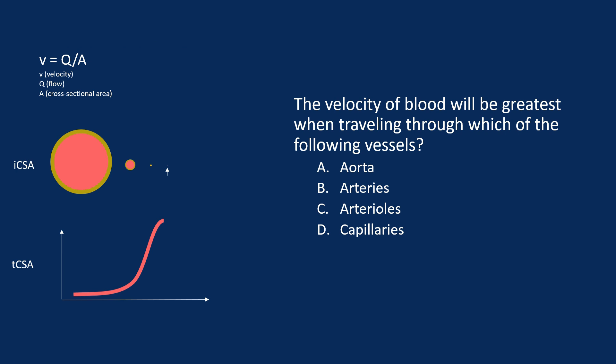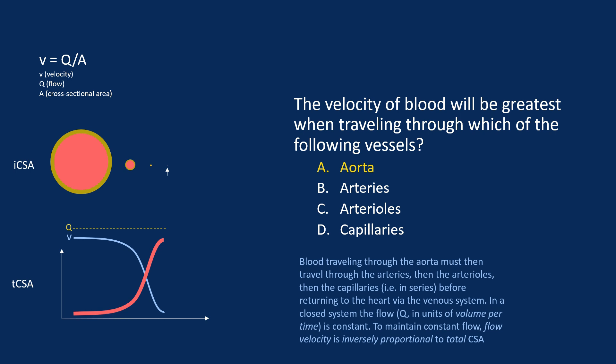Using that information, consider this question: the velocity of blood will be greatest when traveling through which vessel? The answer is the aorta. Velocity equals flow divided by cross-sectional area — a simple equation from fluid dynamics. This relates well to the bloodstream.